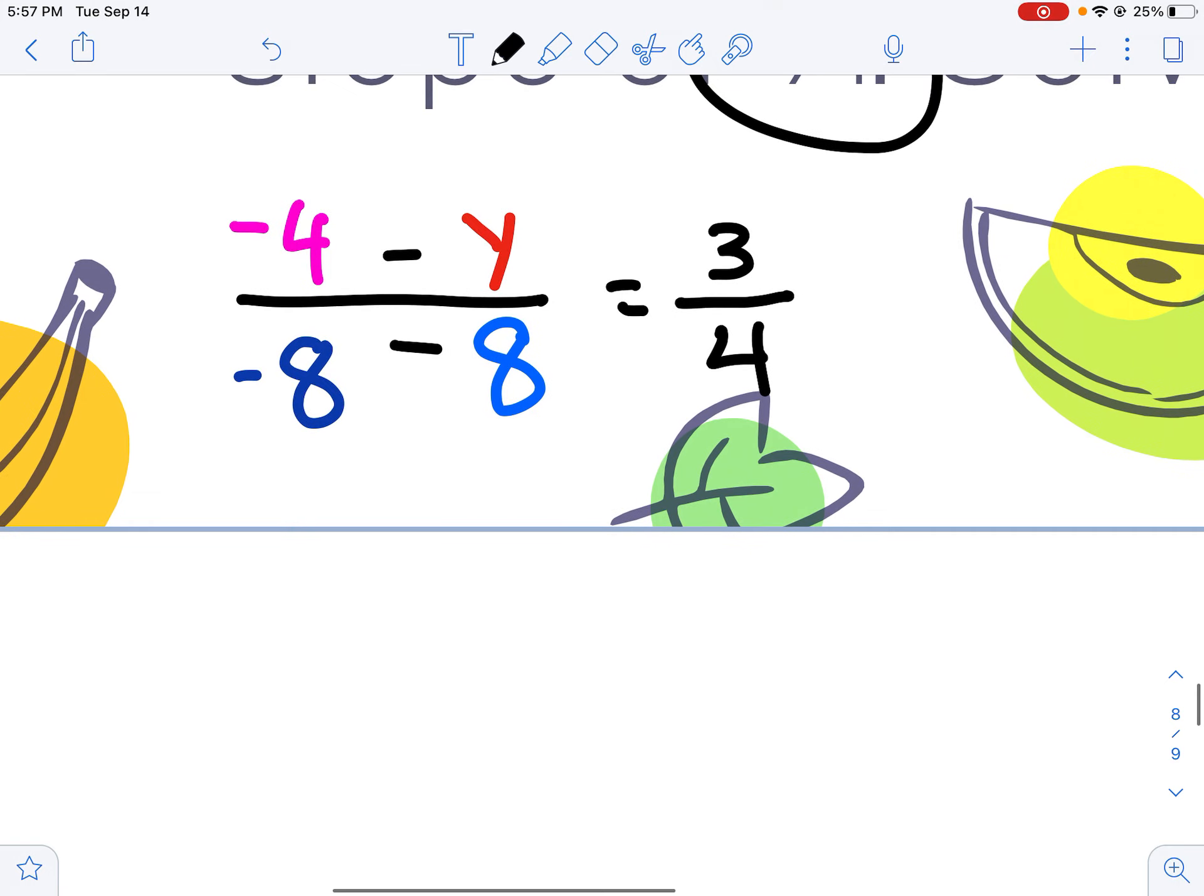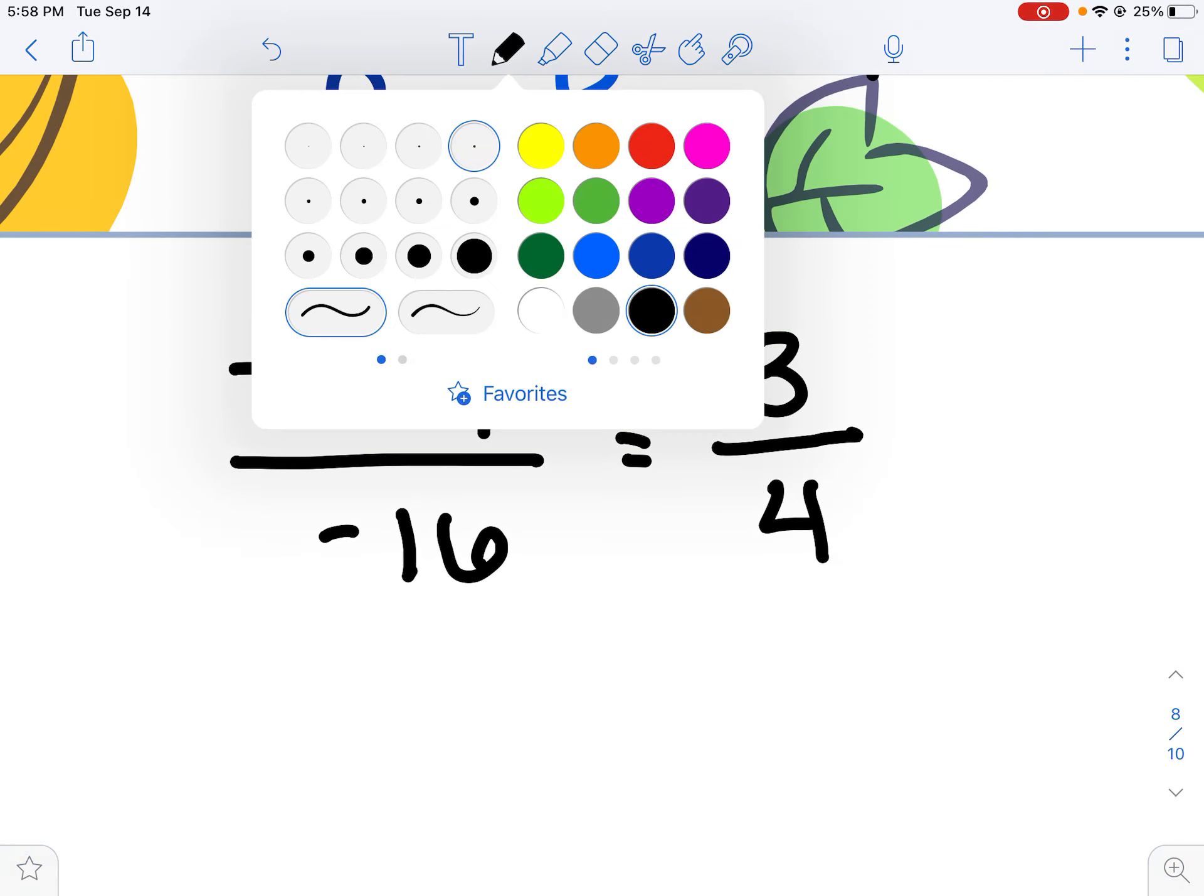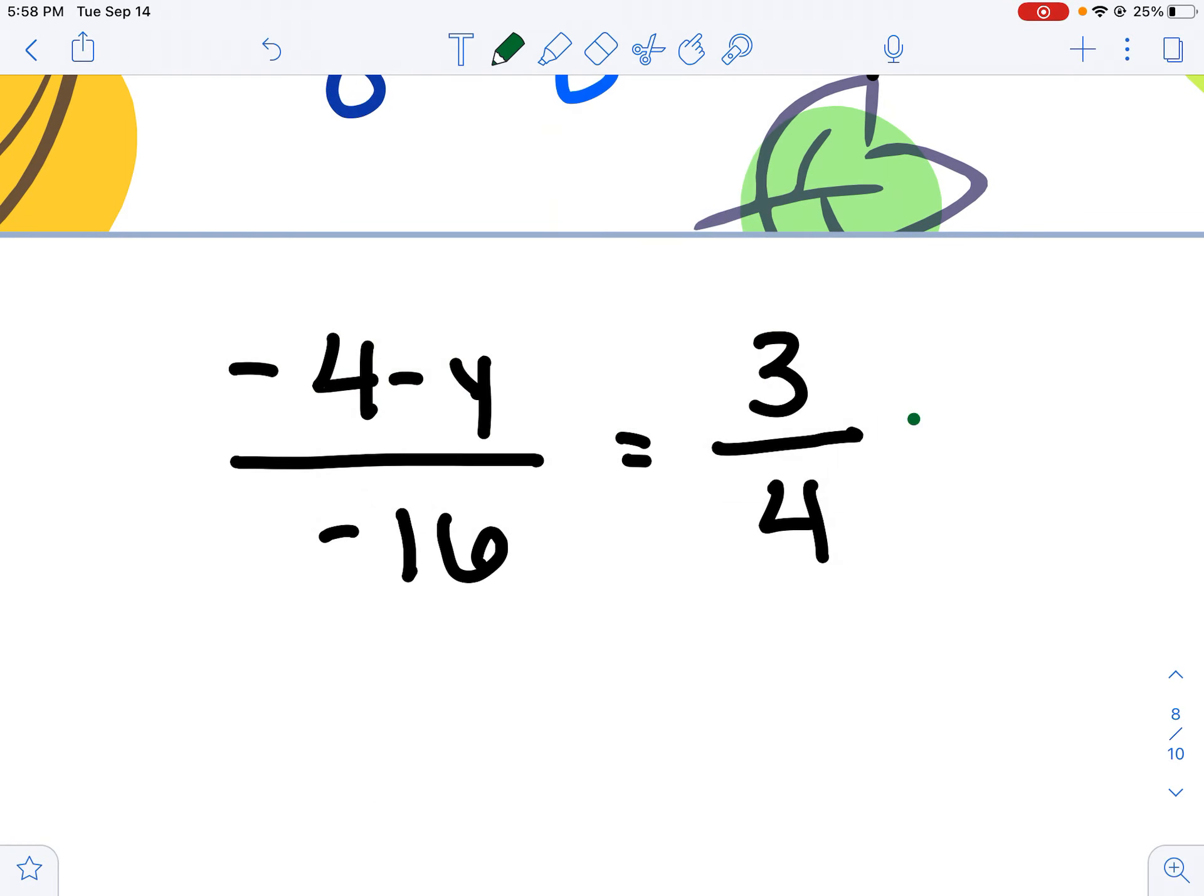Now I'm just doing some algebra. Negative 4 minus y will stay. Negative 8 minus 8 more is negative 16. I'm told that has to equal 3/4. I'm going to clear my fractions now, which means I'm going to multiply both sides by its own denominator.